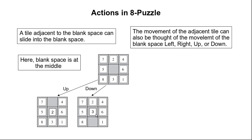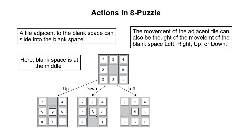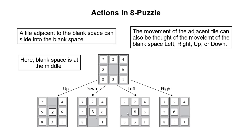If we perform the action where the blank space moves to the left, this would be the new configuration of the board. And if we move the blank space to the right, this would be the new configuration of the board. So in this particular state four different actions can be performed, and the resultant configuration for each move is shown in the diagram.